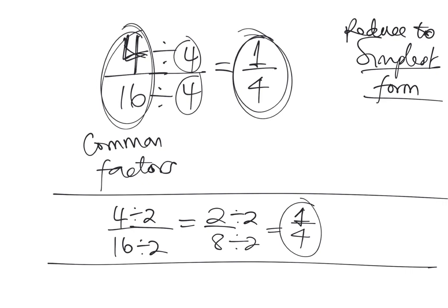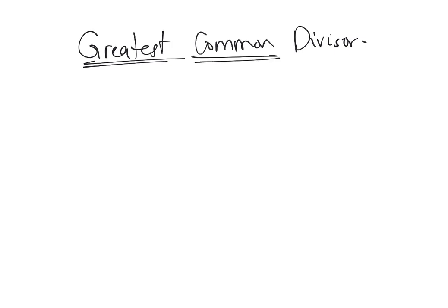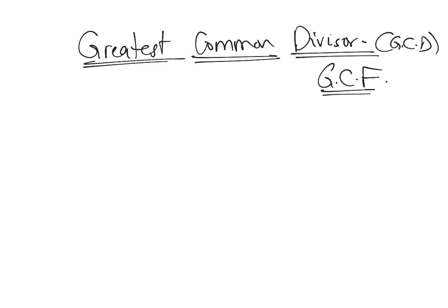Now we introduce a new term: the greatest common divisor, also called the greatest common factor. 'Greatest' means the biggest, 'common' means something they share, and 'divisor' means a factor. Some people call this the GCF.